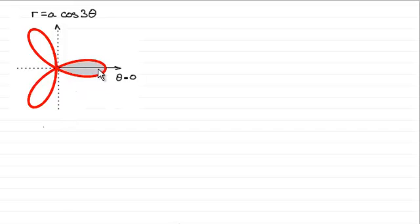Now in order to find this area, first we've got to establish what the angle would have to be going from here to here. For this situation, at this point R would be equal to 0. When R equals 0, it follows that the cosine of 3 theta must be equal to 0.